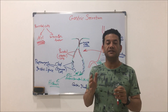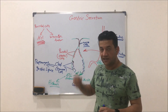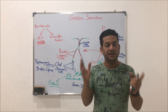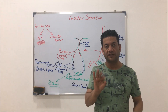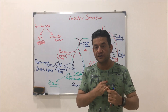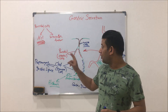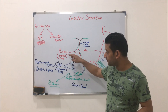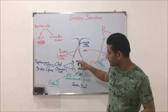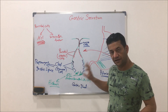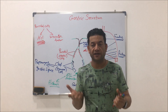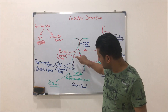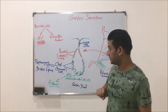بالنسبة للطلاب، لما نريد نتحدث عن السيطرة على إفراز الغدد المعدية، خلينا نتذكر رقم ثلاثة: عندنا ثلاثة أطوار، وثلاثة أنواع من الخلايا، وثلاثة عوامل. هنا راح نتحدث عن السيطرة على إفراز هذه الأنواع من الخلايا الغدية المعدية.